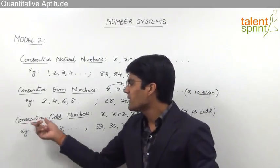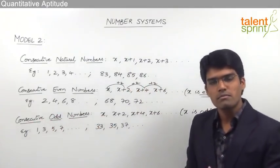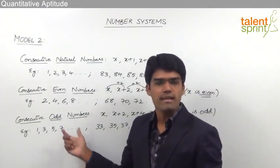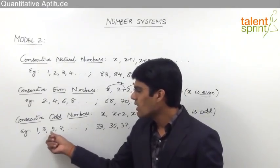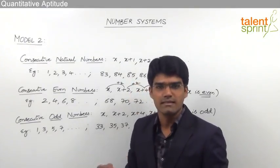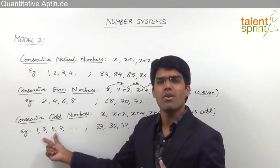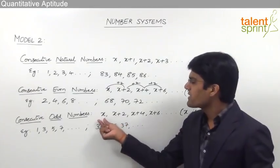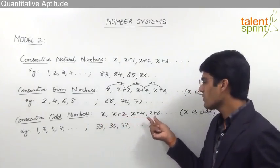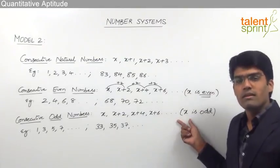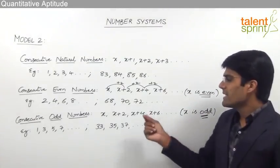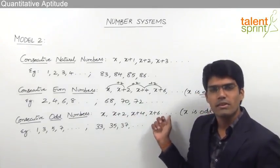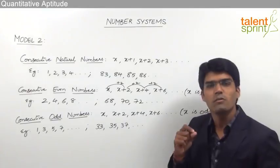Likewise, we have consecutive odd numbers — odd numbers in a row. For example, 1, 3, 5, 7 are consecutive odd numbers, successive odd numbers. Consecutive odd numbers are also represented as x, x+2, x+4, x+6 and so on, where x is odd. The difference between two consecutive odd numbers is always 2.